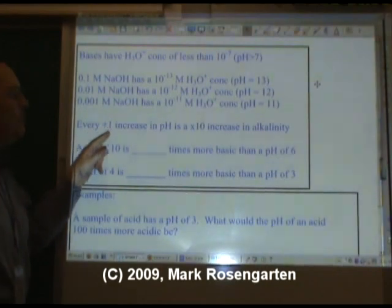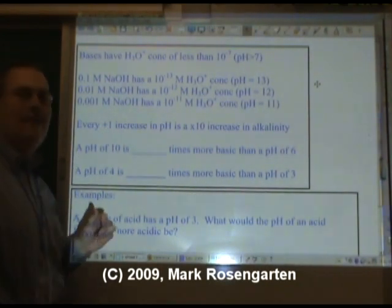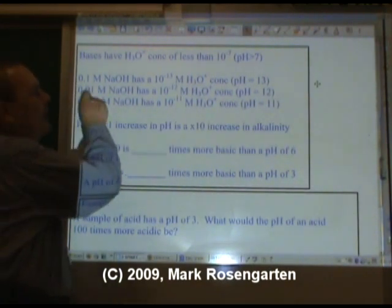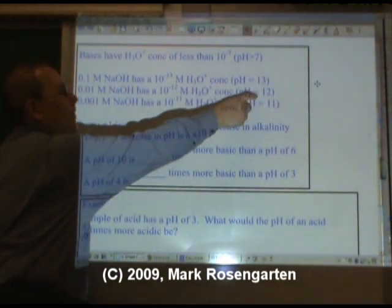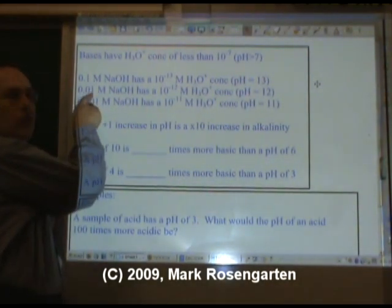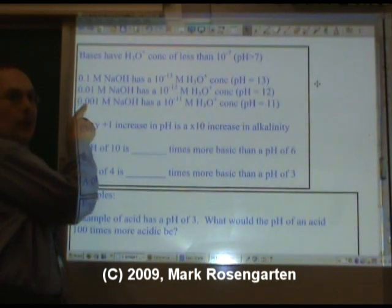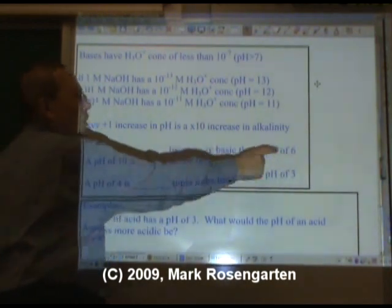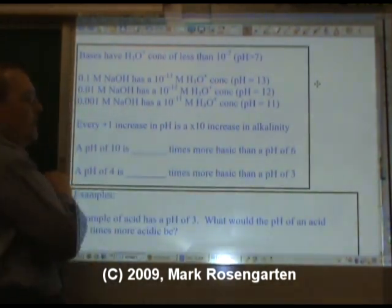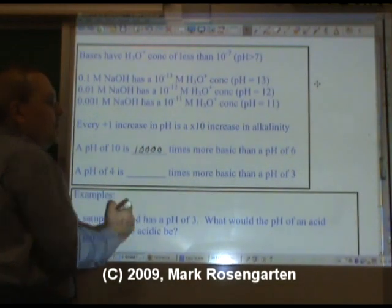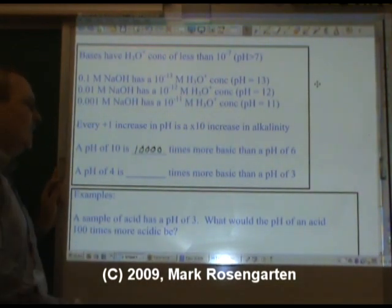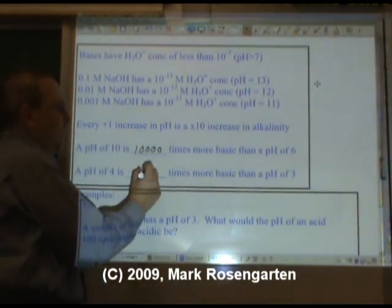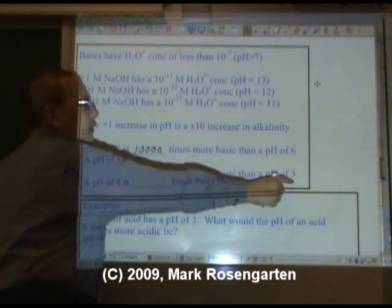So as you can see, every plus 1 increase in pH is a 10-fold increase in alkalinity, or how basic it is. This is 10 times stronger than that, its pH is 1 more than that. Therefore, this base is 10 times stronger than that base, but 100 times stronger than that base. A pH of 10 is 4 powers of 10 different than a pH of 6, 1 followed by 4 zeros. It's 10,000 times more basic. A pH of 4 versus a pH of 3, that's only 10 times more basic, only 1 power of 10 difference.